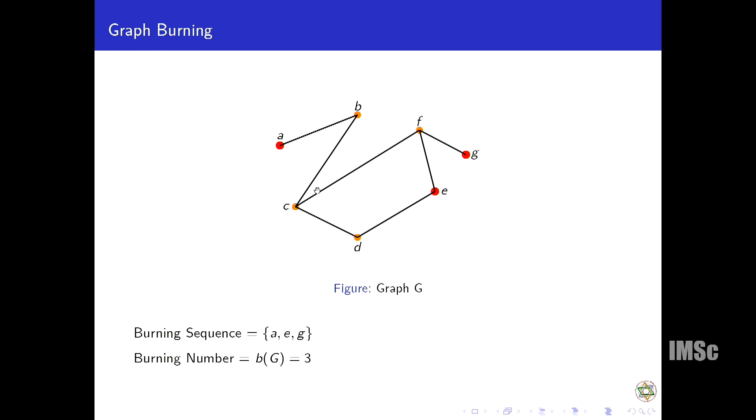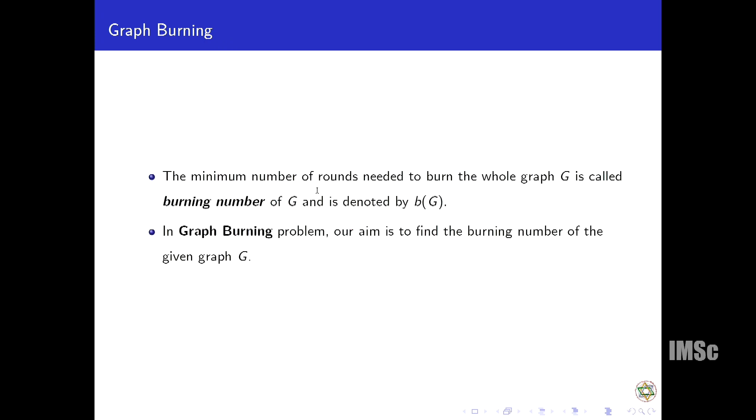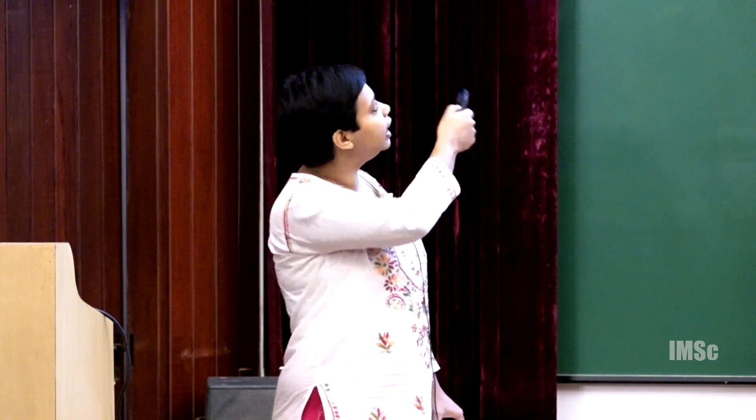We have given fire to a, e, and g. That is my burning sequence, and the burning number is three. We can check that we cannot burn the graph with less than three steps. So the definition: the minimum number of rounds we need to burn the whole graph is called the burning number. Graph burning problem is our aim to find that burning number. As we defined earlier, NP-hard problem means we cannot solve every instance optimally in polynomial time. This graph burning problem is an NP-hard problem.